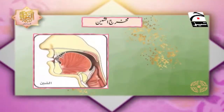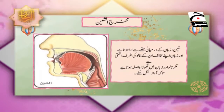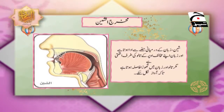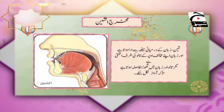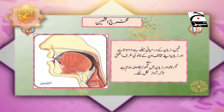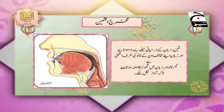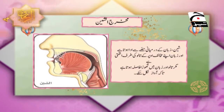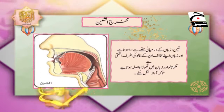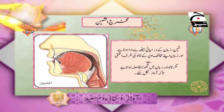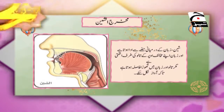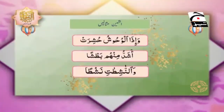شین کا مخرج: شین زبان کے درمیانی حصے سے ادا ہوتا ہے اور زبان اپنے مخالف اوپر کے تالو کی طرف اٹھتی ہے، مگر تالو اور زبان میں تھوڑا سا فاصلہ ہوتا ہے تاکہ آواز نکل سکے۔ اگر تالو کو چھو لیا تو آواز بند ہو جاتی ہے۔ زبان آپ کو محسوس ہوگی کہ اوپر تالو پر نہیں لگی۔ اس کی پریکٹس کرتے ہیں، شین کی مثالیں دیکھتے ہیں۔